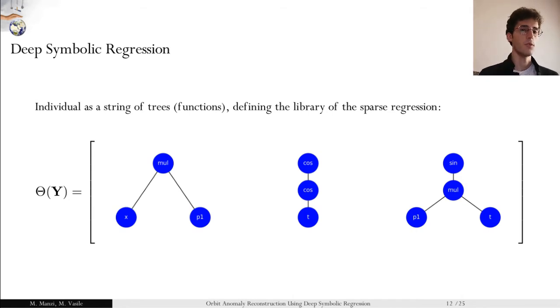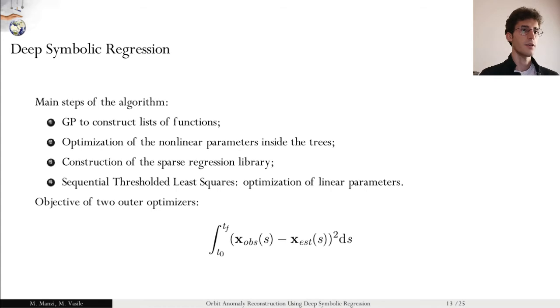That's why we develop what we call here deep symbolic regression. What we're doing is describing a symbolic regression algorithm in which the individual is a list of trees, a list of functions, that can be used to identify the theta matrix to be used for the sparse regression part of the algorithm. The main steps are the construction of the list of functions, the individuals of the genetic programming algorithm. From there, an optimization to estimate the non-linear parameters appearing inside the trees of the genetic programming part of the algorithm.